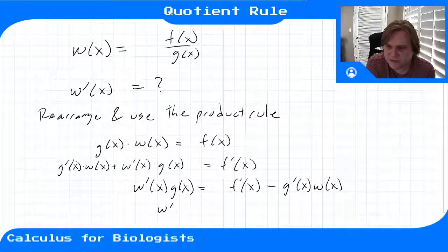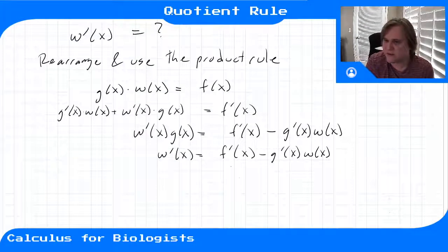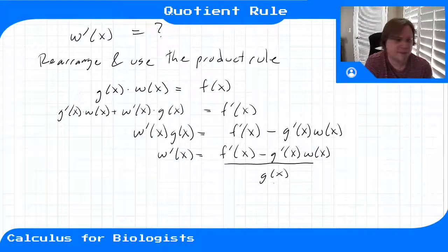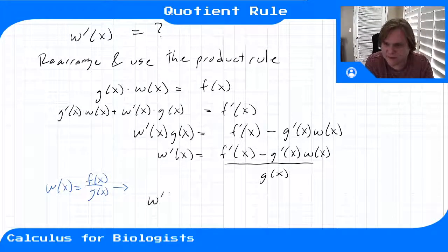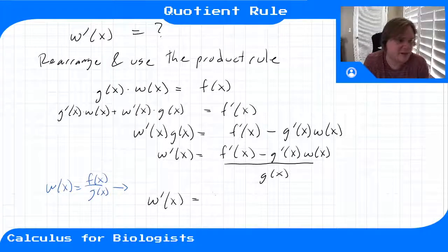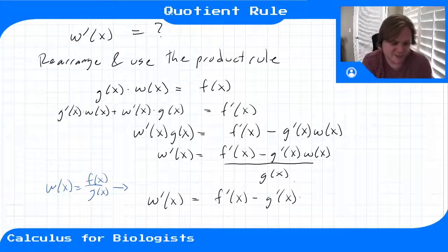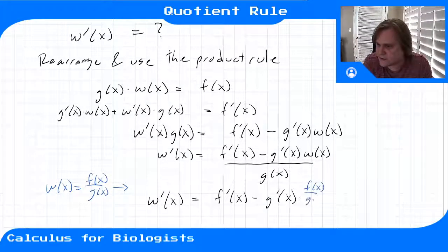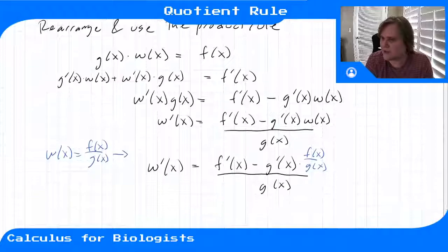Dividing by g, w prime of x equals f prime of x minus g prime of x times w of x, all divided by g of x. Then we make the substitution that w of x equals f over g. So we have f prime of x minus g prime of x times f of x over g of x, all over g of x.